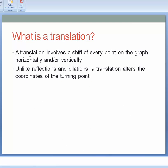What is a translation? Translation involves a shift of every point on the graph horizontally and/or vertically. It can do a horizontal translation, a vertical translation, and it can do both a horizontal and a vertical translation.